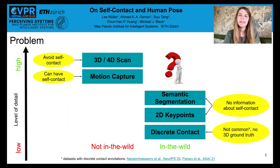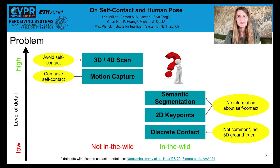A key reason why self-contact has rarely been studied is the lack of suitable datasets. Scans and mocap data provide 3D ground truth but no in-the-wild images. Common image annotations like keypoints or semantic segmentation don't contain information about contact. Recent discrete contact annotations can solve this to some extent, but they're coarse and don't provide 3D ground truth.